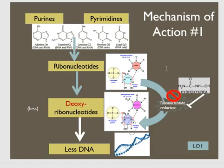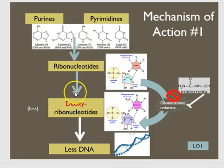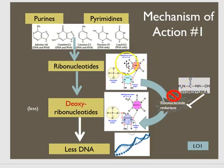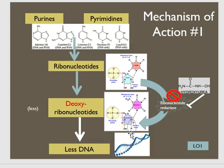Here is a graphic depiction of mechanism of action one. To make DNA, you have purines and pyrimidines that get incorporated into ribonucleotides, which are then converted to deoxyribonucleotides through the enzyme ribonucleotide reductase. Hydroxyurea inhibits this ribonucleotide reductase, which means less DNA is produced because we're inhibiting this rate-limiting step of DNA synthesis. This continues to satisfy learning objective one.